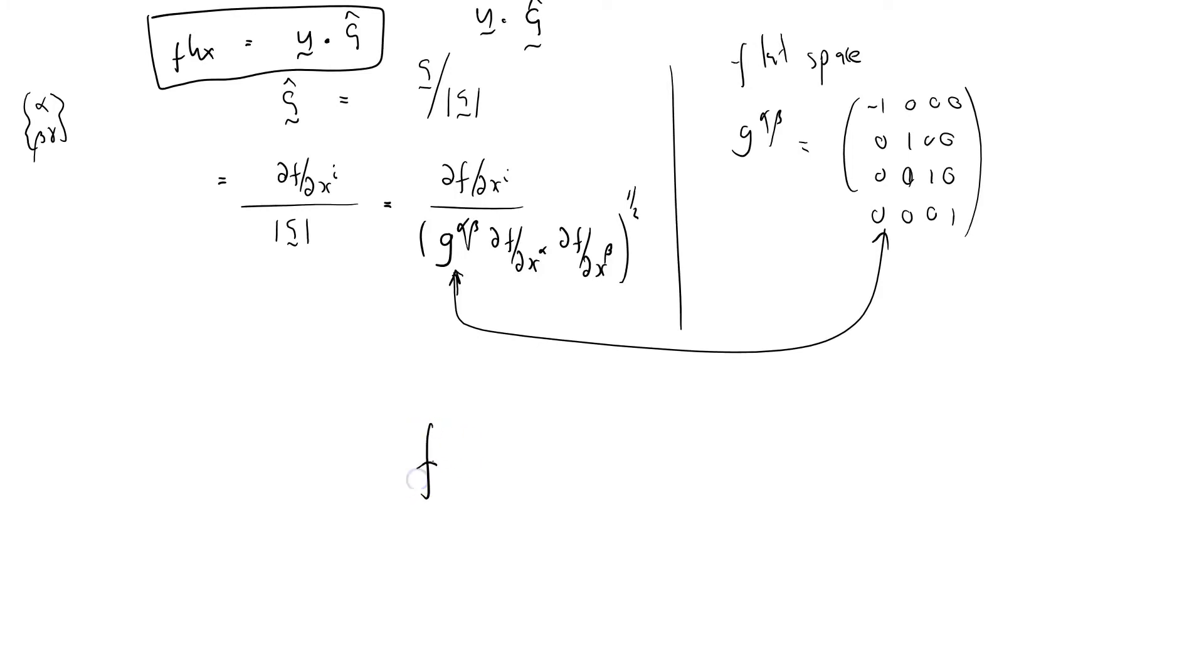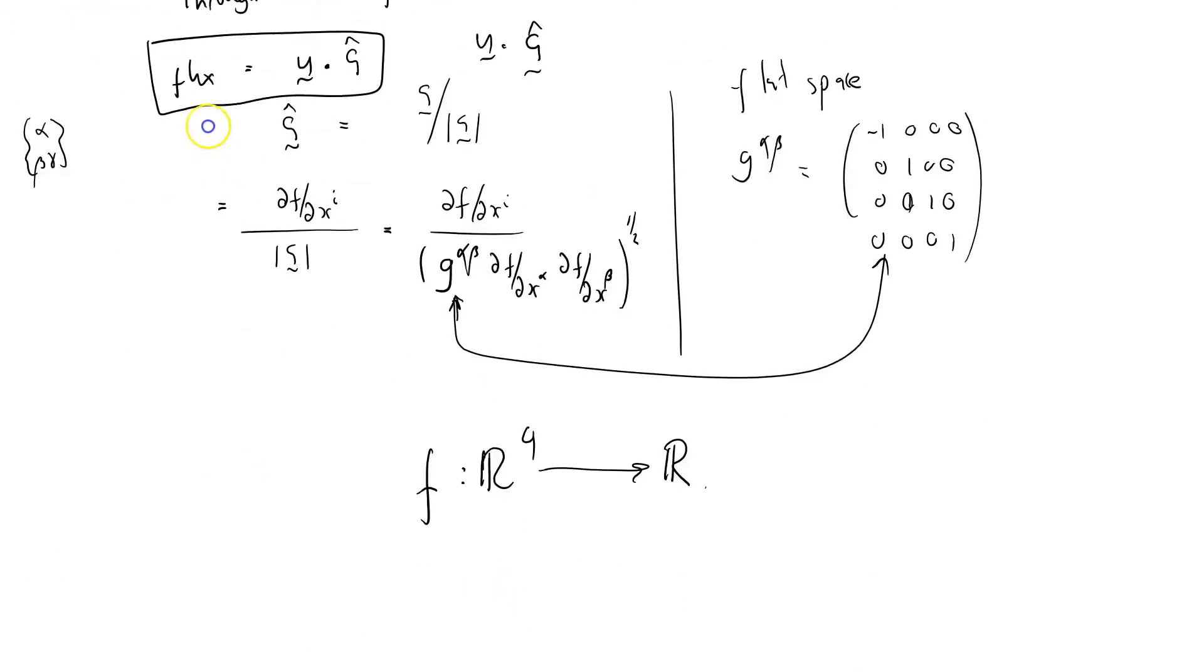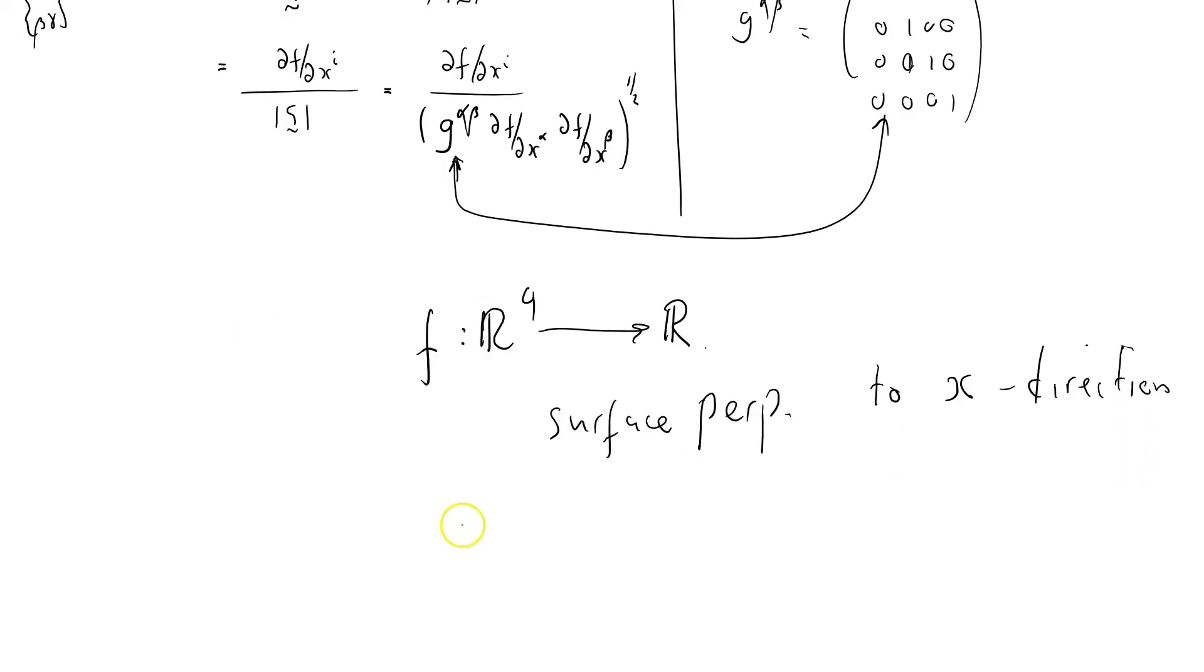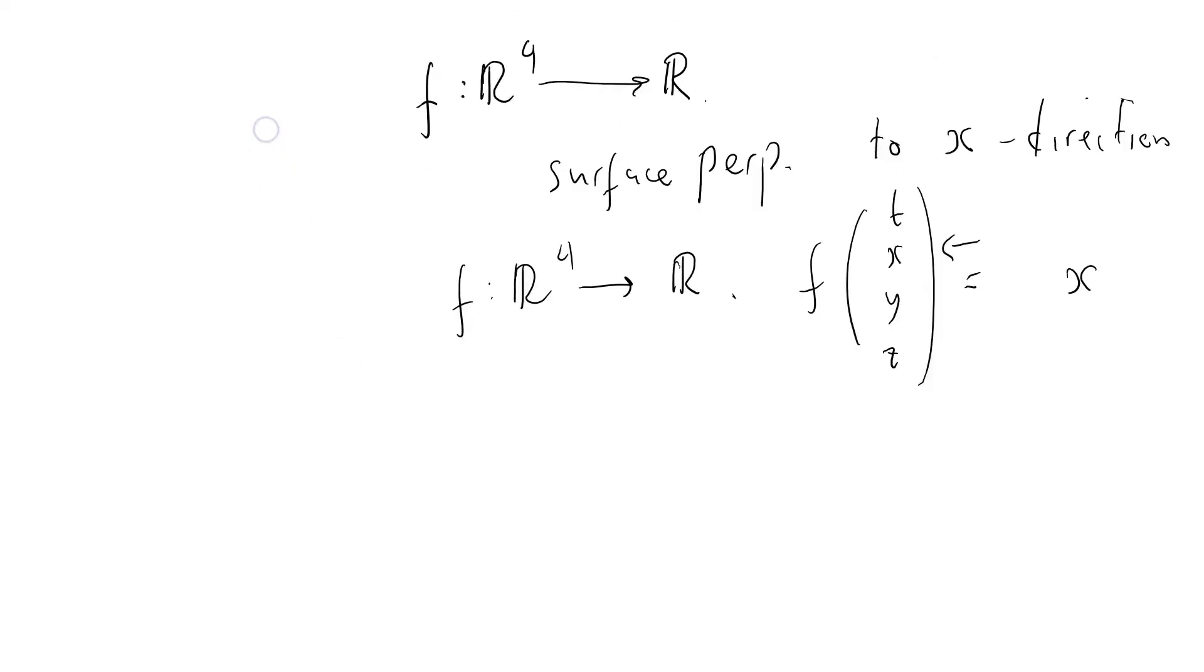So we can take our function f which maps R⁴ to R. So that's what we want to do to define functions. Let's just say we want a surface perpendicular to the x-direction. Well, all we do there is take f which maps R⁴ to R, such that f(t,x,y,z) equals x. We just pick out the one that we want to change. And that defines the surface, and that surface has got a particular flux through it.